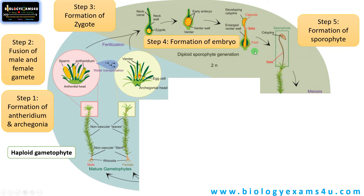The most important point is that the sporophyte is dependent on the gametophyte. The foot region is meant for attachment to the gametophyte and derives nutrients from it for the developing capsule and spores. The elongated region called the seta conducts and transfers food from the foot region to the capsule where developing spores are present. Inside the capsule, spores are formed.